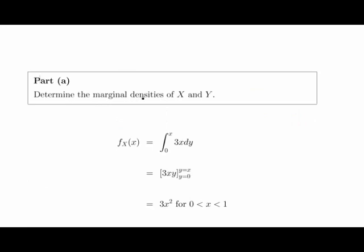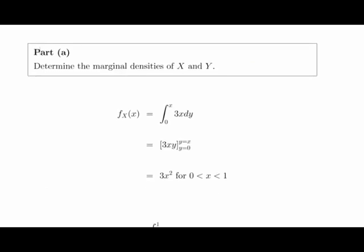For part A, we determine the marginal densities of x and y. The marginal density of x is the joint probability function integrated with respect to y. This is where the limits are important — the range of values of y is 0 to x, so those are our limits of integration. Integrating the joint PDF with respect to y gives us the marginal density of x.